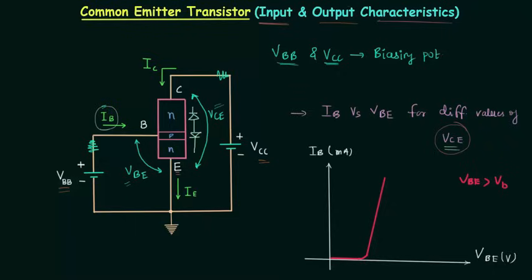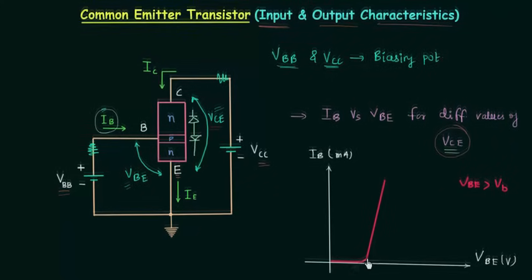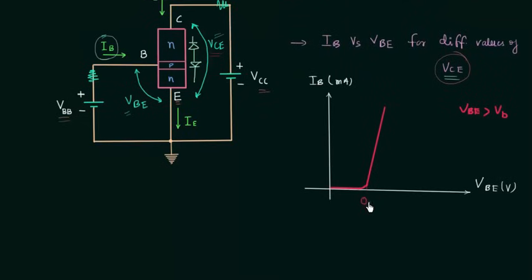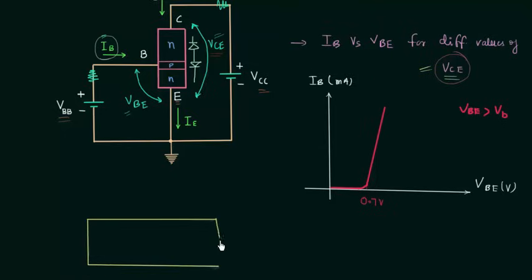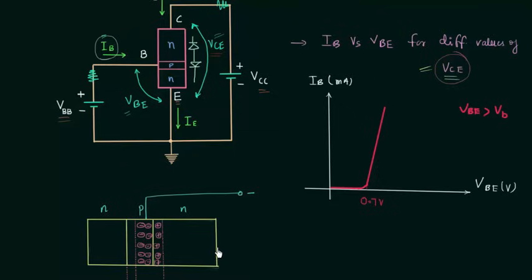The next thing is the effect on characteristics due to the output voltage VCE. I am considering a silicon diode, so the barrier potential is equal to 0.7V. To find this effect we need to revisit the Early Effect or base width modulation, which we discussed in the common base presentation. We have emitter, base, and collector regions for an NPN transistor in active mode. In active mode, emitter base junction is forward biased and collector base junction is reverse biased. The voltage across the collector base junction is VCB, where VCE equals VCB plus VBE.